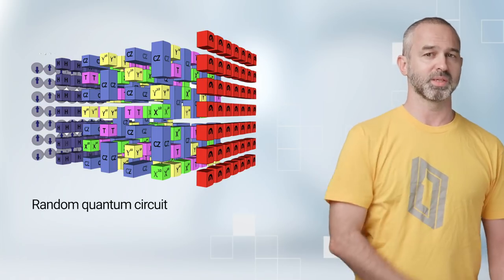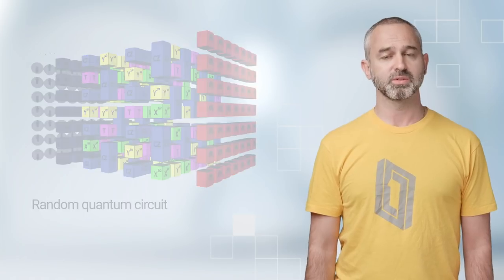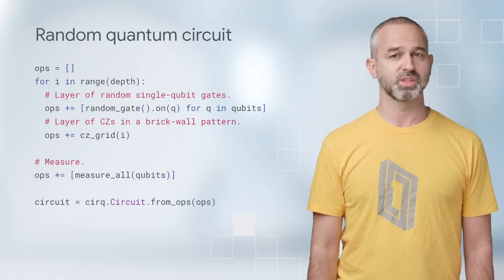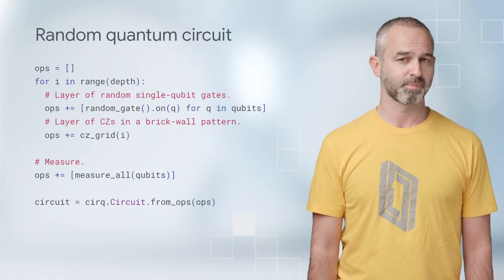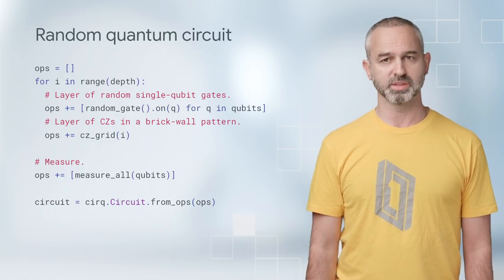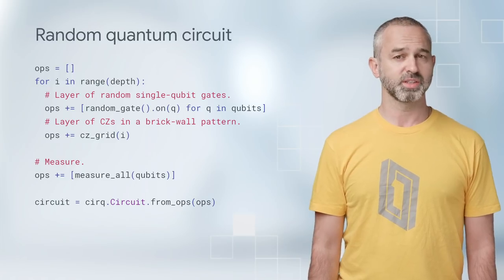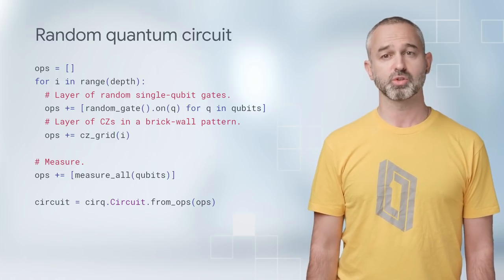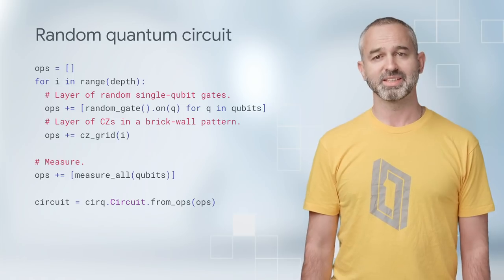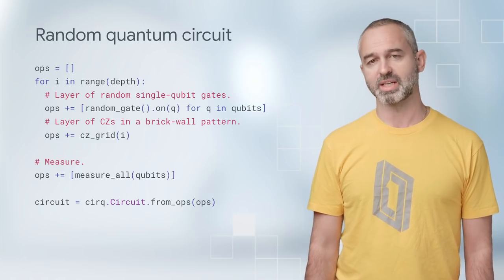A measurement at the end of the quantum circuit produces a string of bits. For the quantum supremacy experiment, we choose the quantum gates at random. This is a hello world program for quantum computers. Crucially, in this case, we have the strongest theoretical evidence against the Strong Church Turing thesis. It takes exponential time to simulate a random quantum circuit with a classical computer.